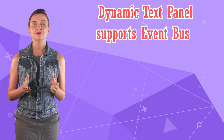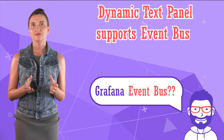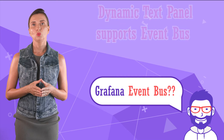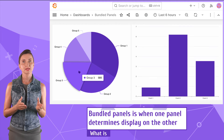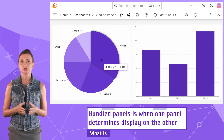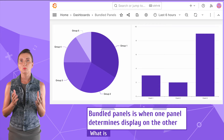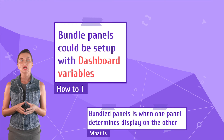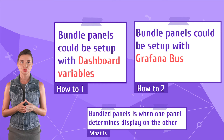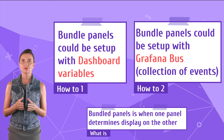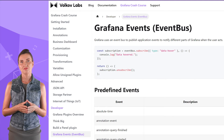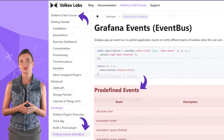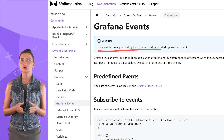Dynamic Text panel and Grafana Event Bus: not all people have heard of the Grafana Event Bus. It's mainly needed when you want your panels on the dashboard to interact with each other — for instance, when a user selects something on one panel, the other panel reacts accordingly. The most utilized approach for creating linked panels is using dashboard variables, and the Grafana Event Bus is the other solution. It is a collection of events like hover, which you can subscribe your panel to and define the actions it should take. The Dynamic Text supports Grafana Event Bus.